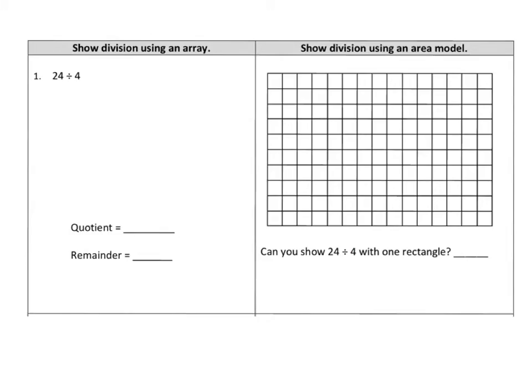Let's take a look at number one right off the bat. We are going to divide 24 by 4, and we are going to show that with an array and an area model. So let's first show it using an array. Let's see, 24 dots divided by 4s. So let's see how many rows or columns of 4 dots that's going to need. So that's 4, then there's 8, there's 12, there's 16, there's 20, and there's 24.